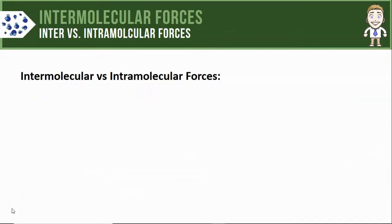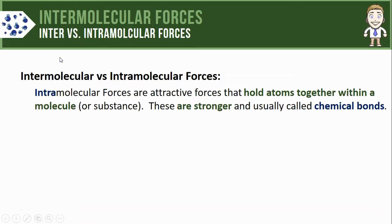To begin the classification process we first have to know that there are two broad categories of attractive forces in chemistry: intermolecular and intramolecular. The intramolecular forces are the ones that hold atoms together within the molecule, and even though the word 'molecular' is in the title, we sometimes use this to describe substances that aren't made of molecules at all. These forces tend to be much stronger and are usually simply called chemical bonds.